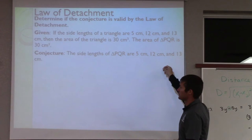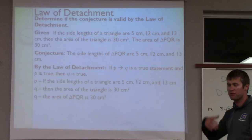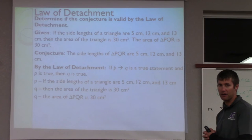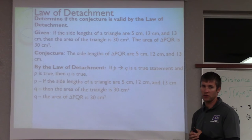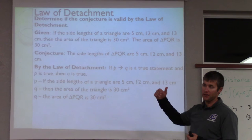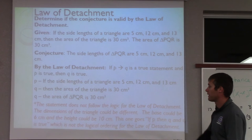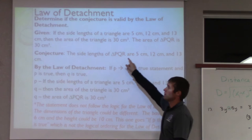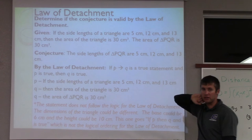We want to check — is this actually true? Can we draw this conclusion? How do we find area? Area of a triangle is half the base times the height. Is there any other side lengths you could use where you could get 30 centimeters squared? Well, you could go 6 and 10 — side lengths of 6 and 10 would be different than 5 and 12, but would it still work? The answer is yes. So we can't use the law of detachment for this because the statement isn't exclusively true. There are other side lengths that could produce an area of 30 centimeters, so we can't conclude that the sides must be 5, 12, and 13.